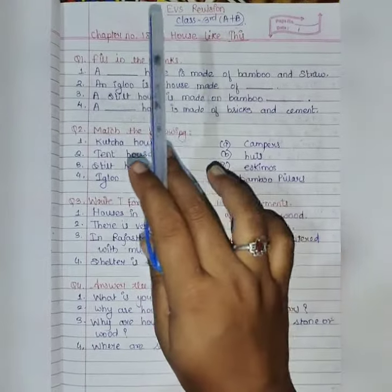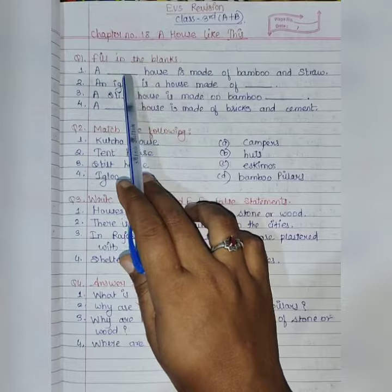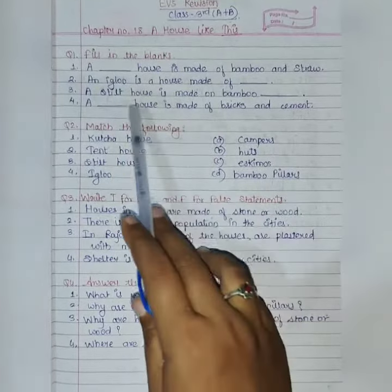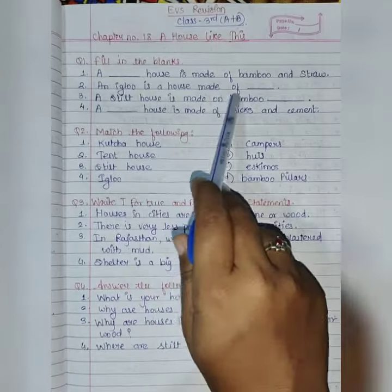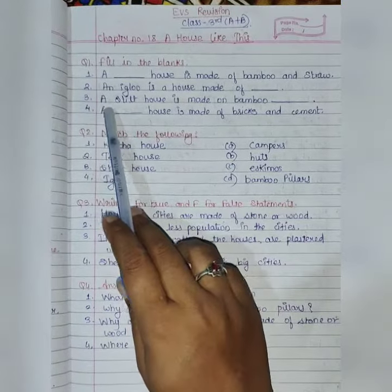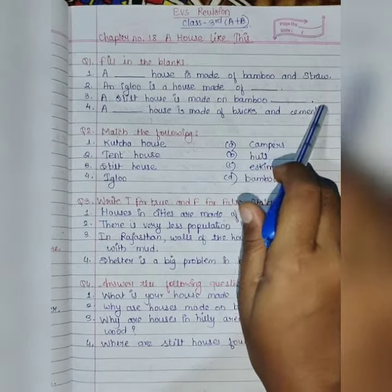Second, an igloo is a house made up of fill in the blank. Third, a stilt house is made up of bamboo, fill in the blank.